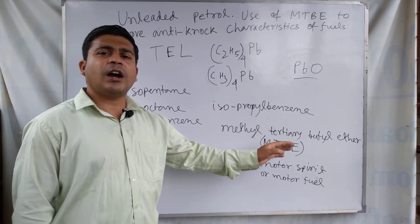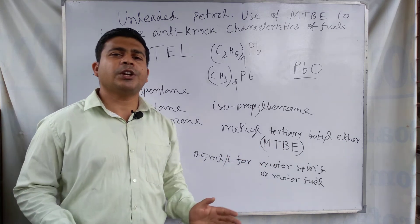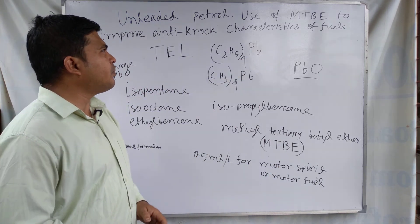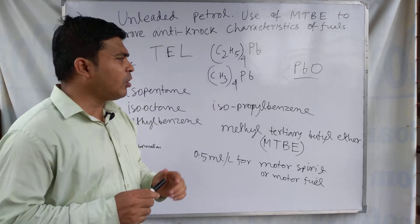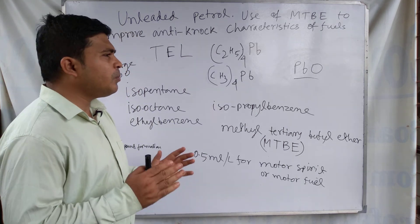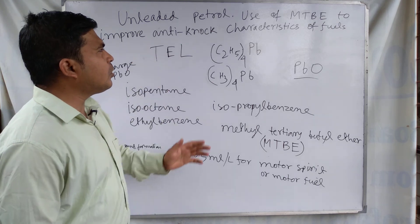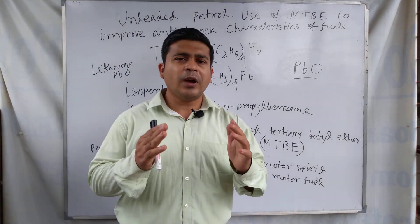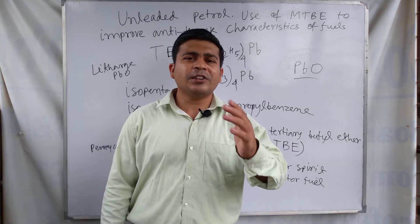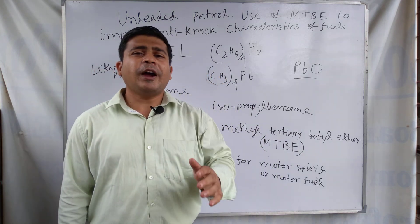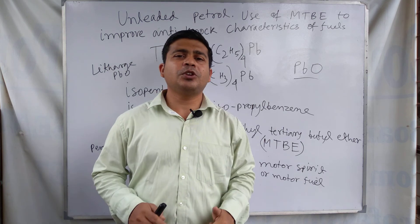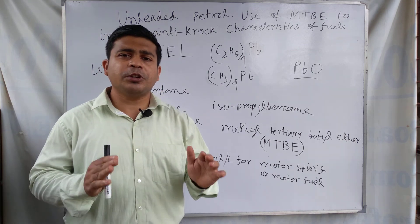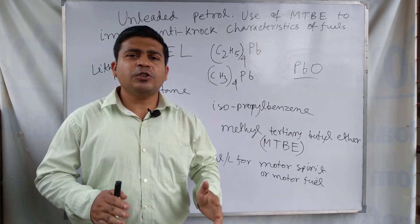The catalytic converter oxidizes unburned hydrocarbons to carbon dioxide and water. For this reason, MTBE is preferred as the anti-knocking substance in IC fuel or internal combustion engine fuel. This concludes the discussion about unleaded petrol and the use of MTBE to improve the anti-knock characteristics of the fuel. If you have any confusion, you can ask in the comment section below, and if you find this channel educational, you can subscribe. Thank you for watching.